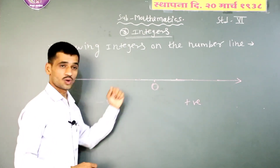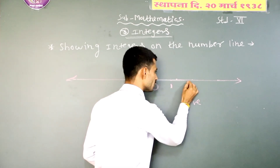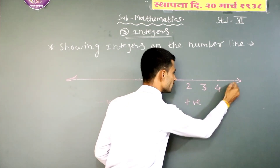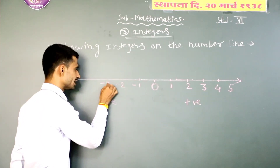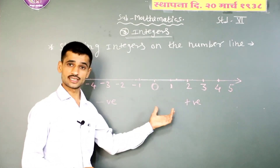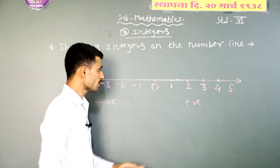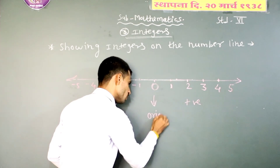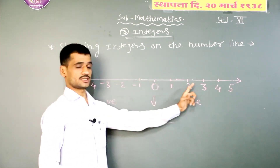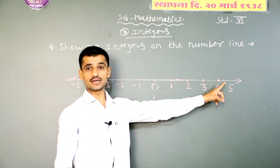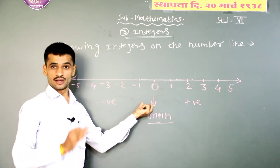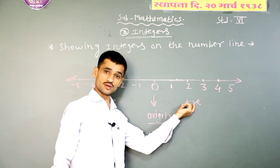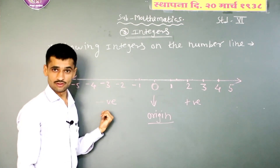On the right side: one, two, three, four, and five. On the left side: negative one, negative two, negative three, negative four. Plus sign is not written before positive numbers generally, but I am going to show a plus sign here. The number zero is the origin. These numbers are shown on a straight line — that is the number line. So showing integers on the number line: the origin is zero, positive numbers are on the right, and negative numbers are on the left.